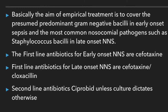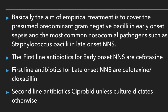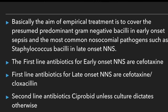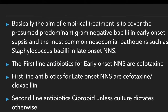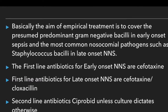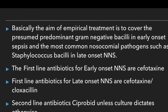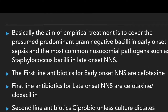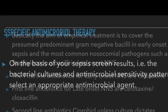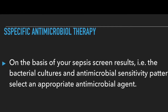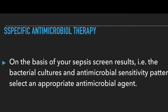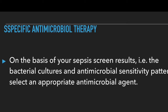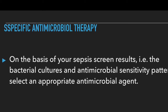The first line antibiotic for early onset is cefotaxime. First line antibiotics for late onset neonatal sepsis are cefotaxime or cloxacillin. For second line antibiotics, you may want to use ciprofloxacin, unless culture dictates otherwise. Specific antimicrobial therapy is based on the results of the septic screen — you select an appropriate antimicrobial agent based on bacterial cultures and antimicrobial sensitivity patterns.